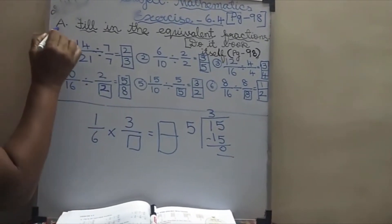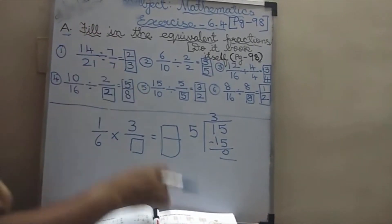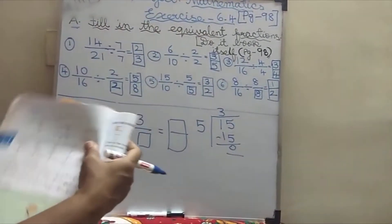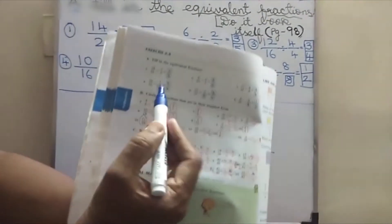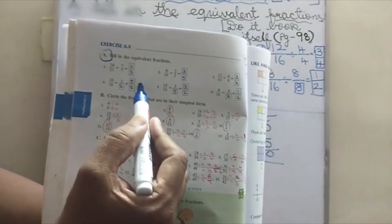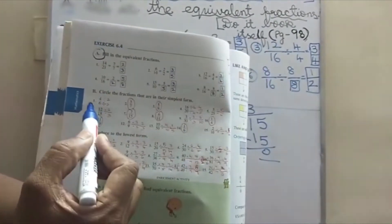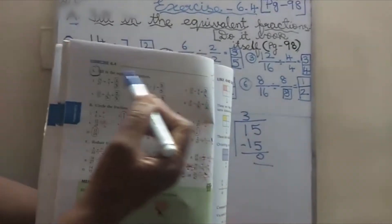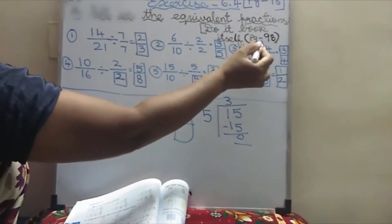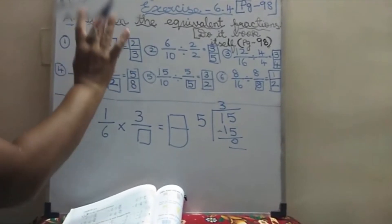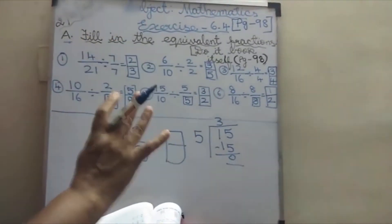Listen carefully. This A1, you can do it in the book itself. You can't write the fill-in-the-boxes in the notebook. You copy down in the book itself. Don't forget — you can copy down in the book itself. B1 and C1, you can do in the notebook. Copy down this A1 in the book itself, page number 98.